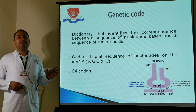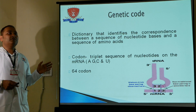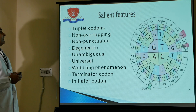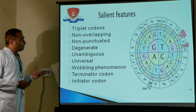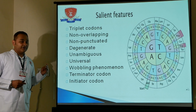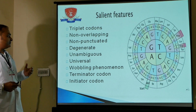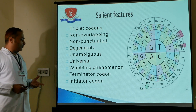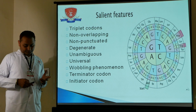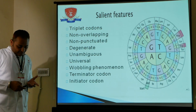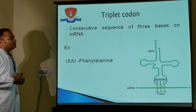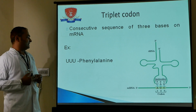The basic pattern is used to identify codon and anticodon. The salient features of the genetic code are: triplet codon, non-overlapping, non-punctuate, degenerate, unambiguous, universal, wobbling phenomena, terminator codon, and initiator codon. A triplet codon is a consecutive sequence of three bases on the messenger RNA.